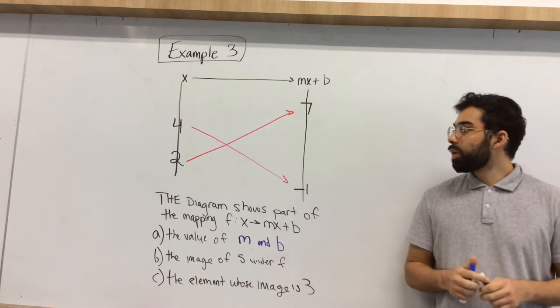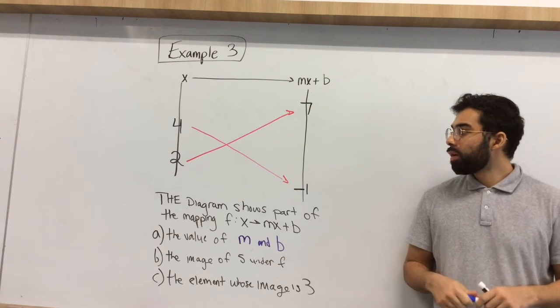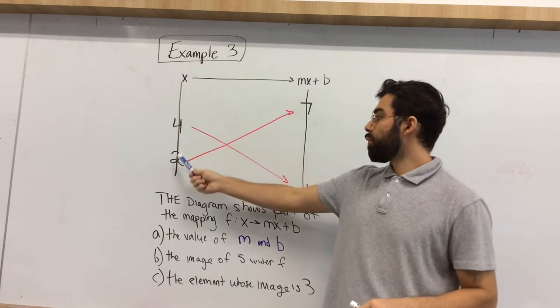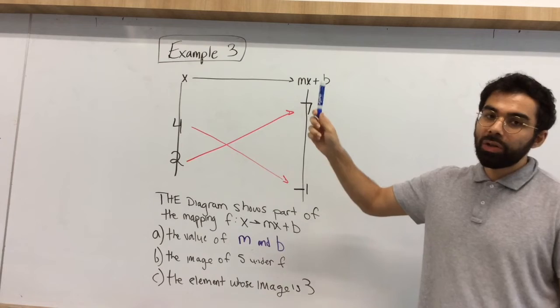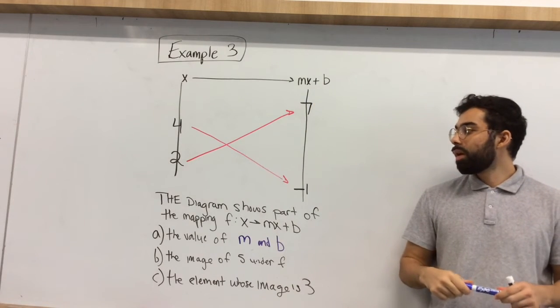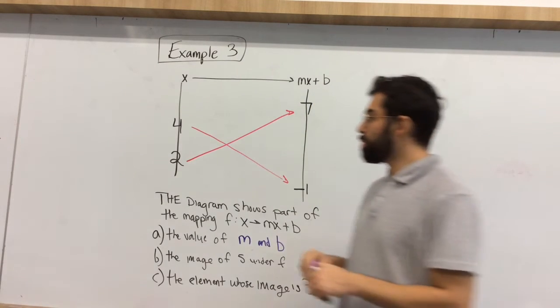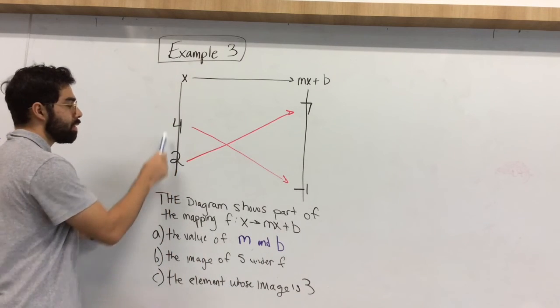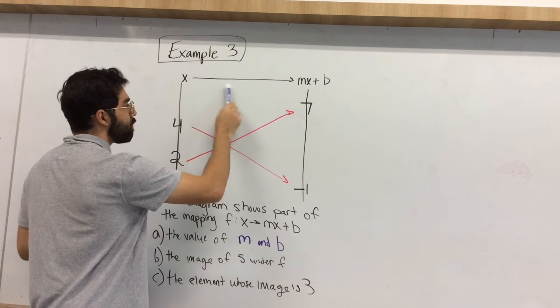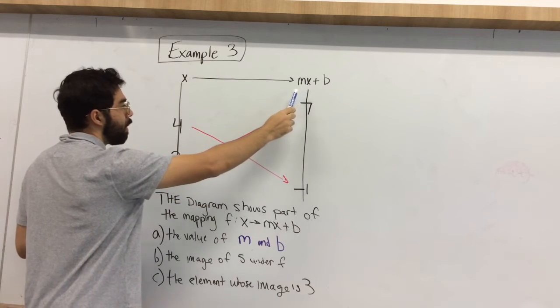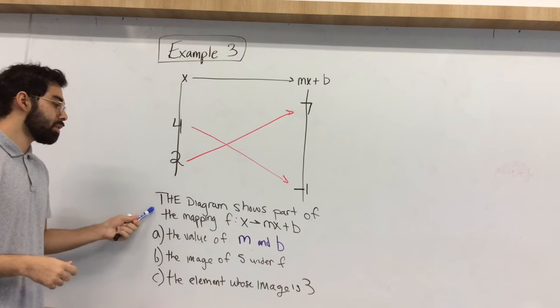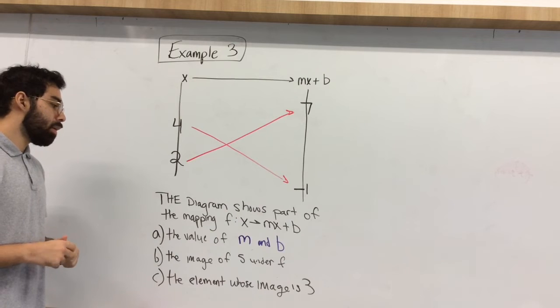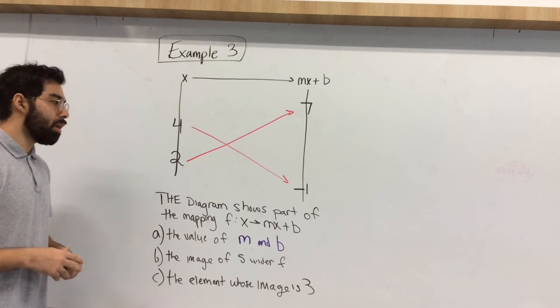All right, for example 3, example 3 displays a diagram displaying what our inputs are, which is 4 and 2, and what our outputs are, 7 and negative 1, using the function contained in mx plus b. Now again, this might be a bit confusing, but it's actually not too bad. So we're using these x values, plugging them into the function of mx plus b, and this is what your outputs are.